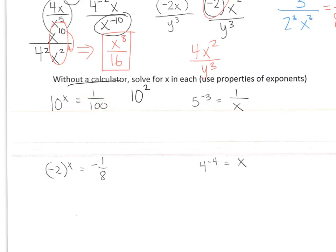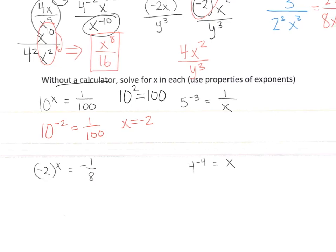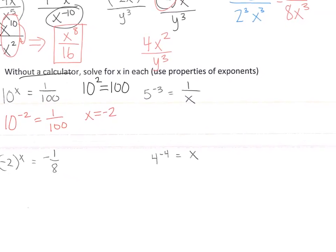On the bottom, without a calculator, you solve for x using properties of exponents. 10 to what power is 1 over 100? I know that 10 to the second power is 100, but this 100 is in the denominator, so the 2 would have to be negative. So it's 10 to the negative 2 equals 1 over 100. Therefore x is negative 2.